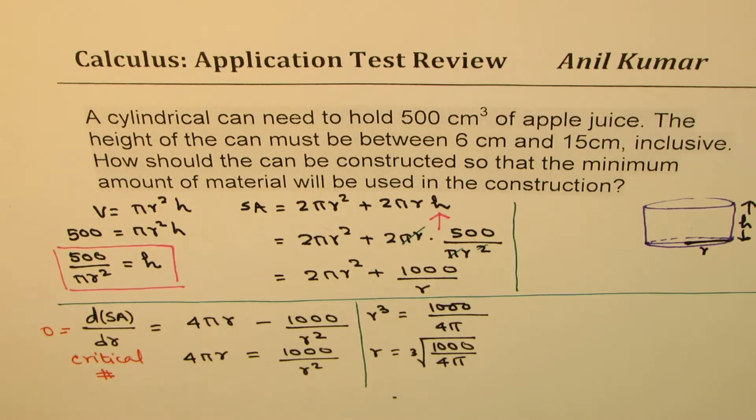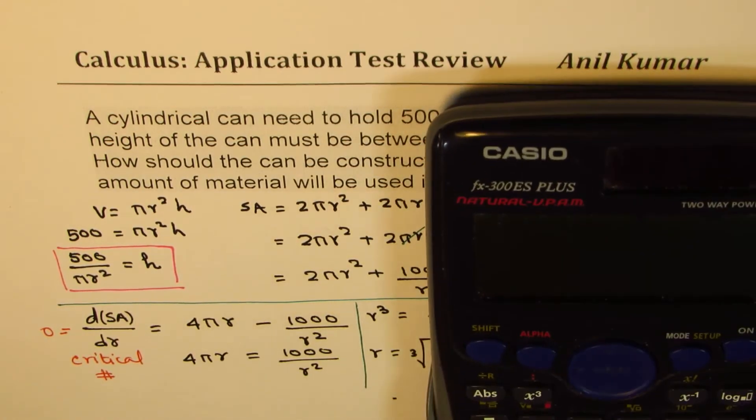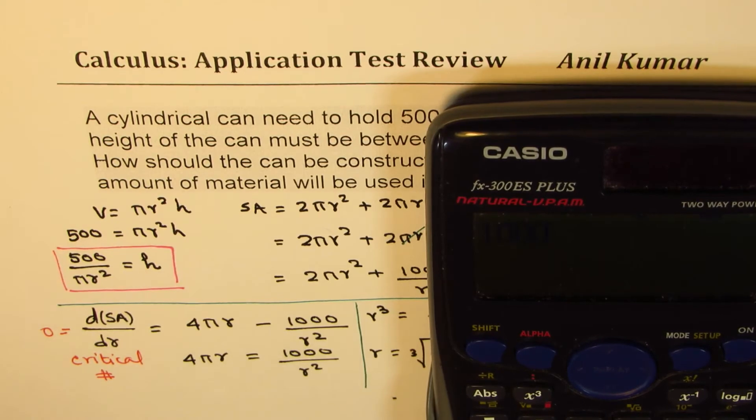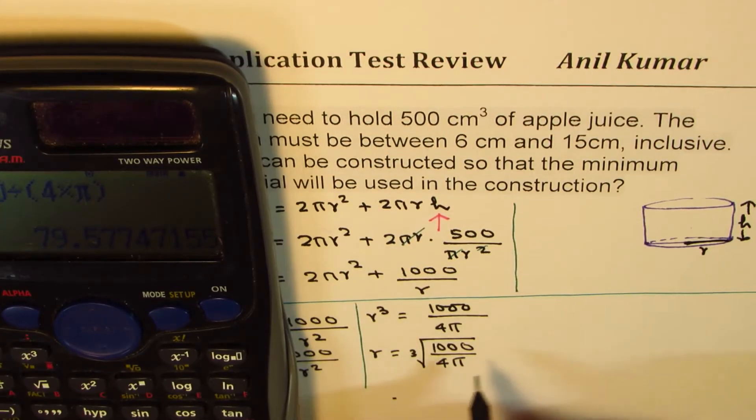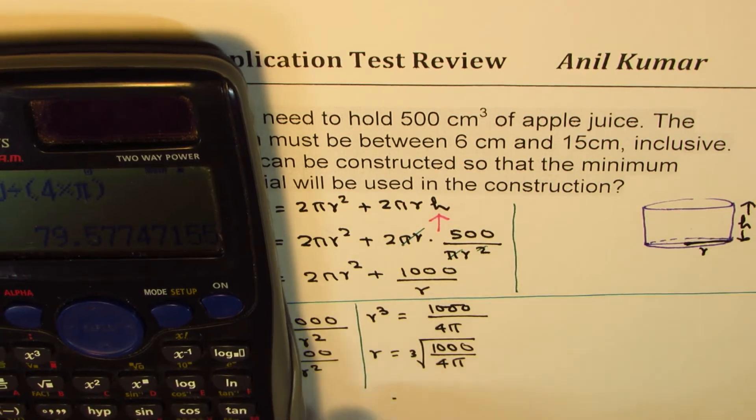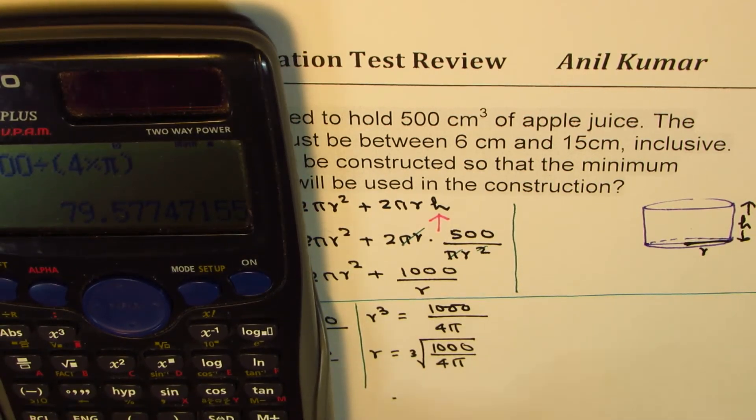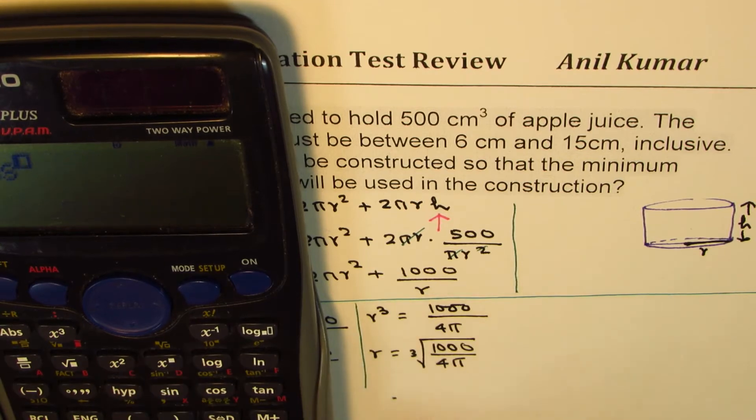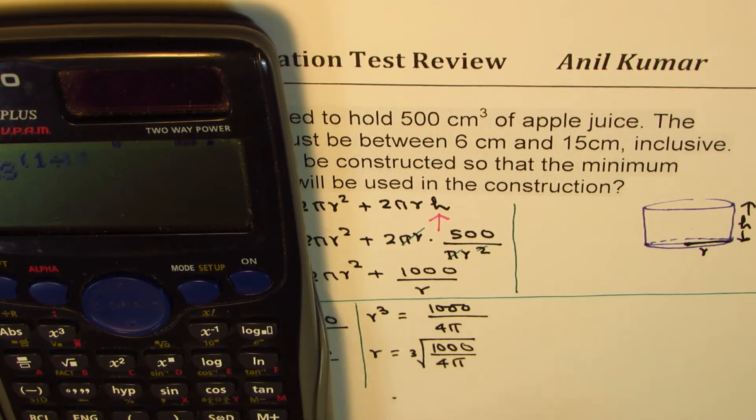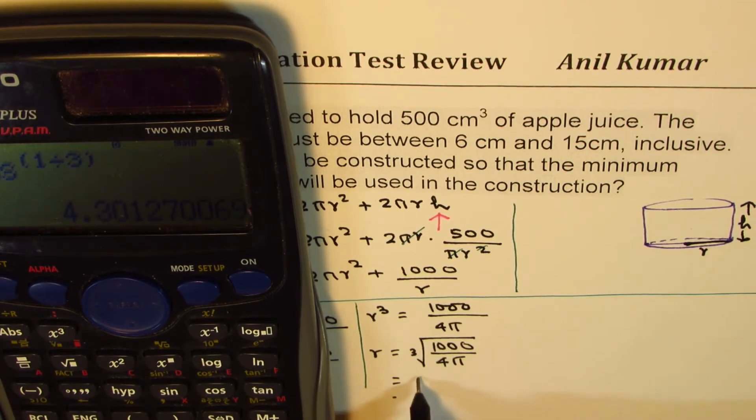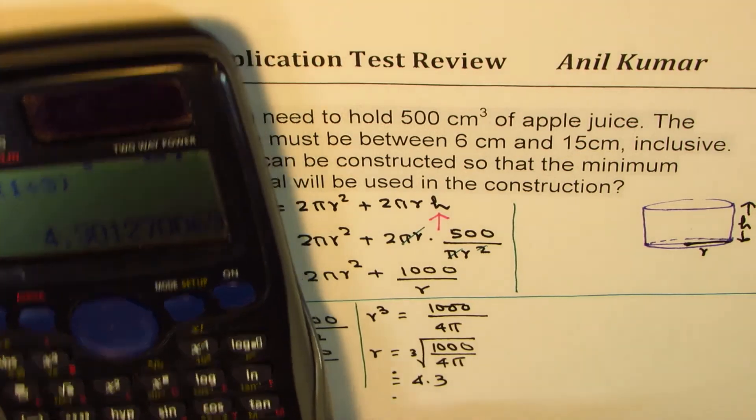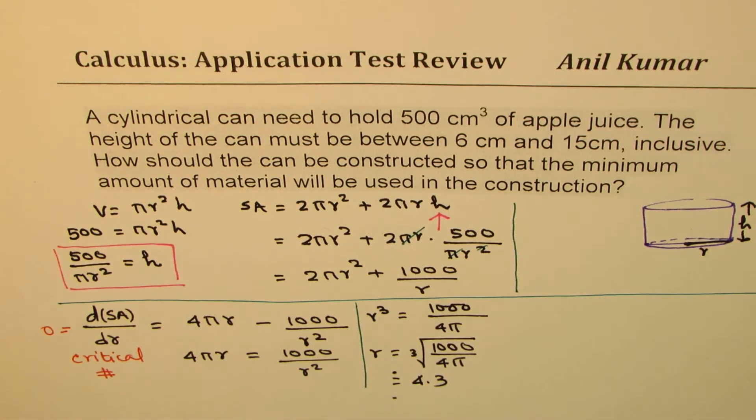So we'll do 1000 divided by 4 times π which equals whatever and we'll find cube root of this. Let's find cube root. So we say to the power of within bracket 1 divided by 3 which equals 4.3 approximately. So we get radius of 4.3.